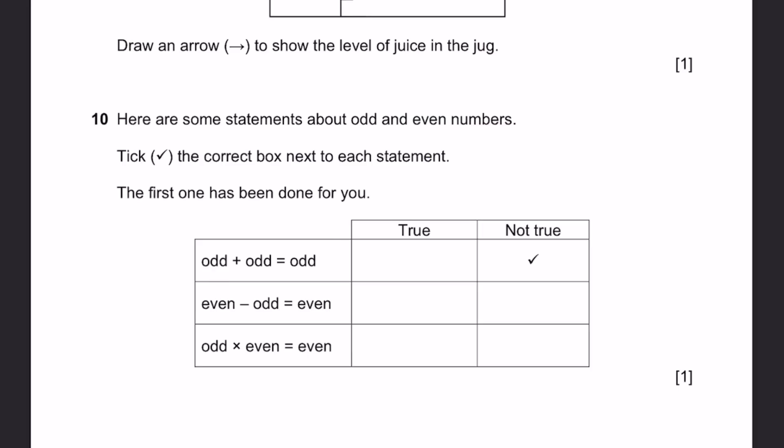Question 10. Here are some statements about odd and even numbers. Tick the correct box next to each statement. Odd plus odd equals odd. Not true because, let's say 3, 5. Two odd numbers. When we add, you get 8, which is even. Even minus odd equals even. This is also not true because let's take 6 minus 3. 6 minus 3 is equal to 3. And that's odd, not even.